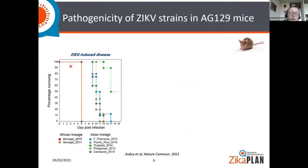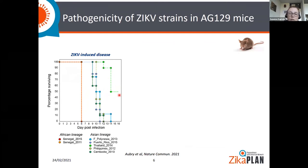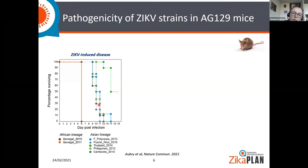When we infected AG129 mice, all mice infected with the African strains became morbid and had to be euthanized on day six post-infection. The Thailand strain, on the other hand, showed a considerably more attenuated profile, with 50% survival. All other Asian Zika virus strains showed a more intermediate pathogenic profile.